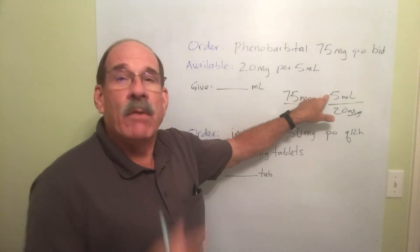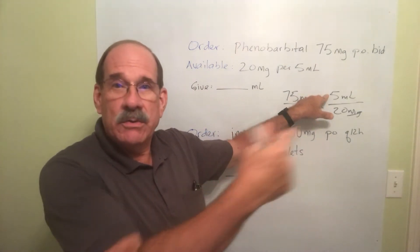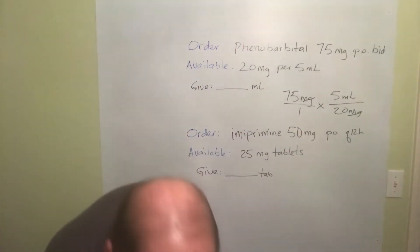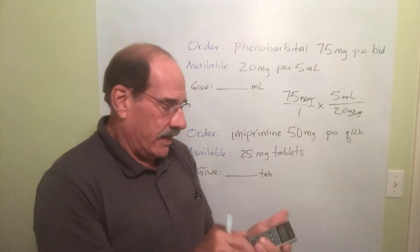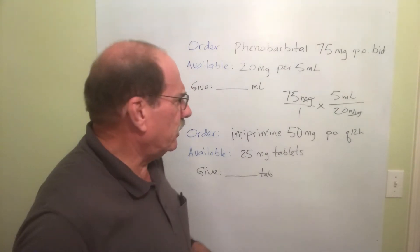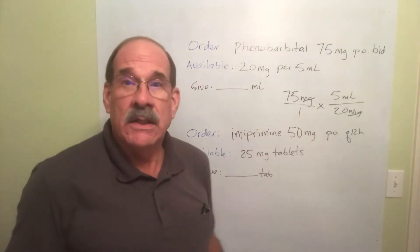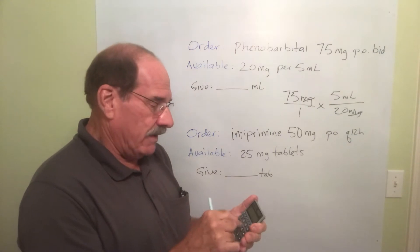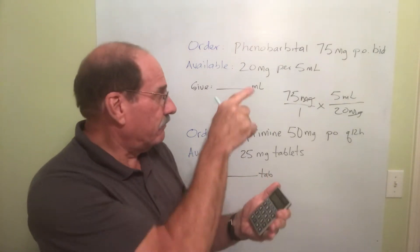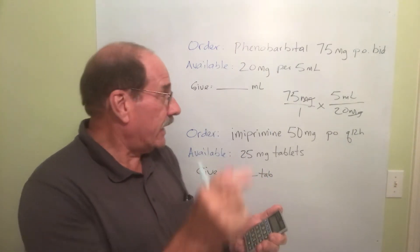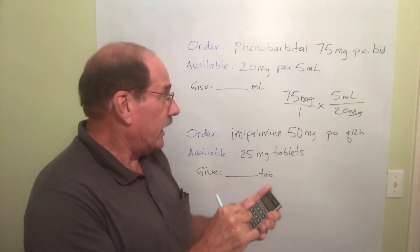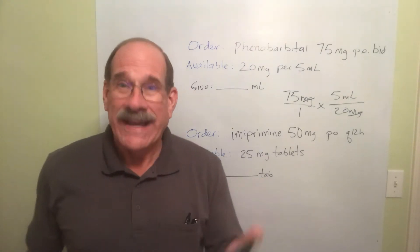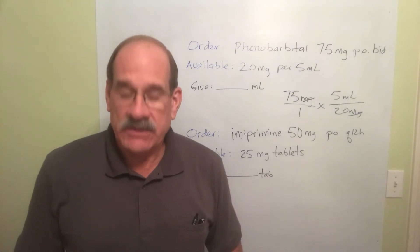75 times 5 — you multiply the two top numbers, then you divide by the bottom number. Let's see what that is. I'm sure you can all do that in your head, but in case you can't, which I can't — 75 times 5, then I divide that by 20. And the answer is 18.75.